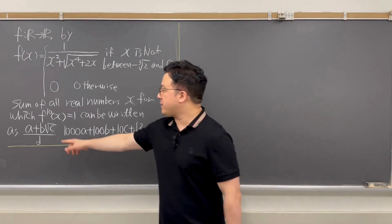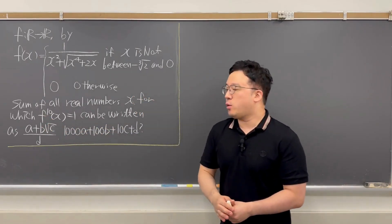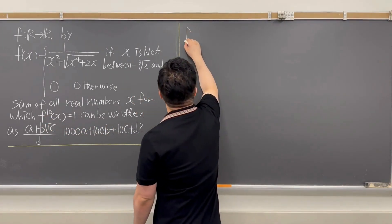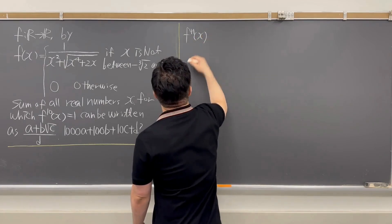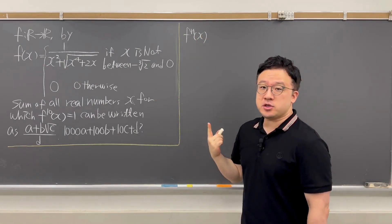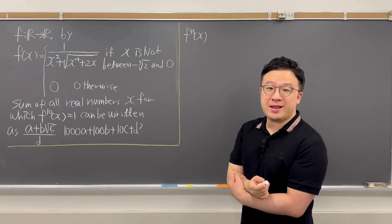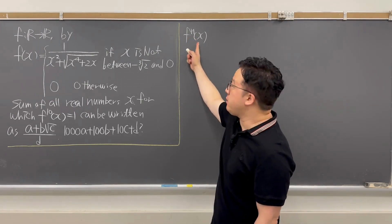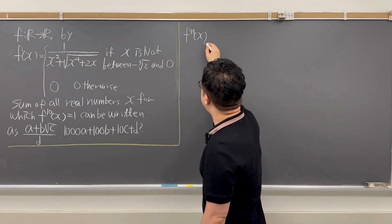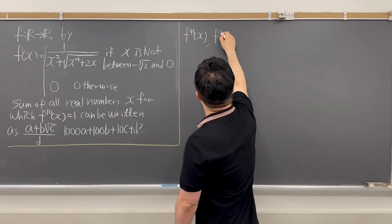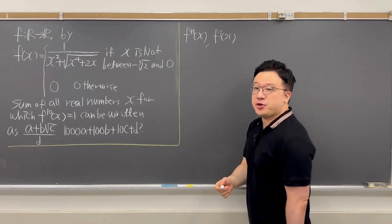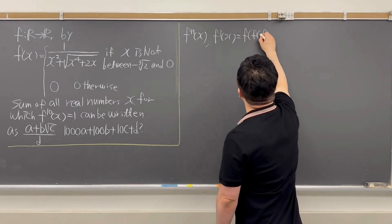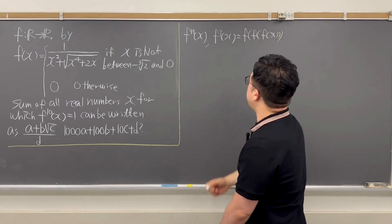Before we start, let's talk about f₁₀(x). The question describes fₙ(x) as the function f iterated n times — so this is not f to the power of n. For example, f₃(x) is not f cubed of x, but simply f(f(f(x))).